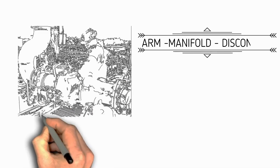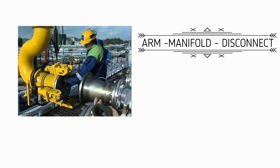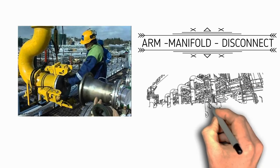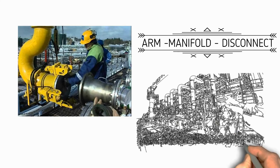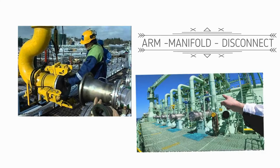Next is arms disconnection. When the shore arm and manifold have been purged, the shore arms can now be disconnected from the vessel's manifold.